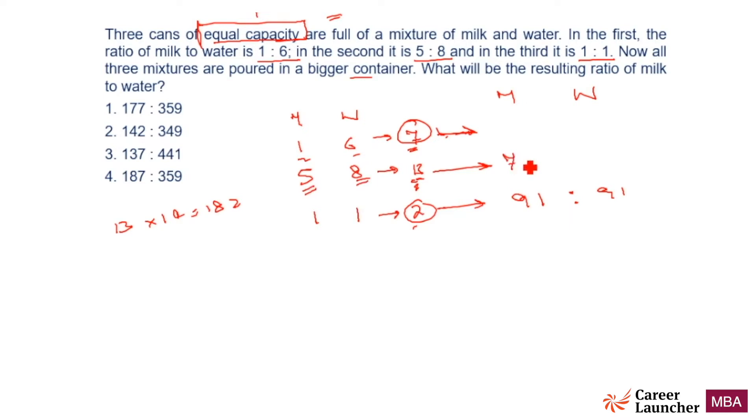So what should I do? 14 into 5 and 14 into 8. 14 into 5 is 70. I know the total is 182, so rather than 14 into 8, I will do 182 minus 70, which is 112.